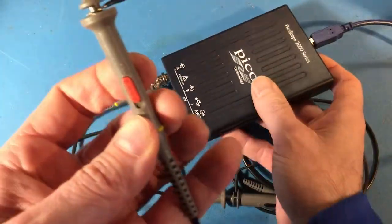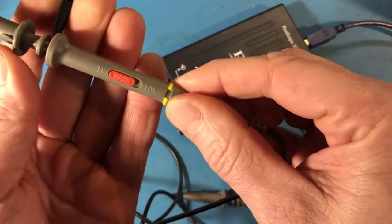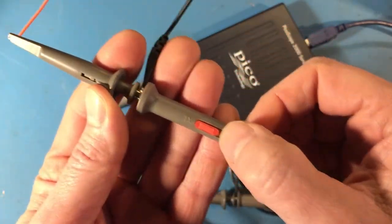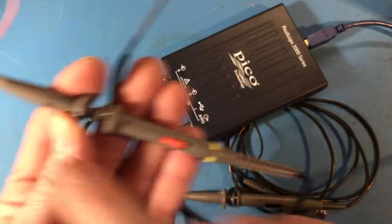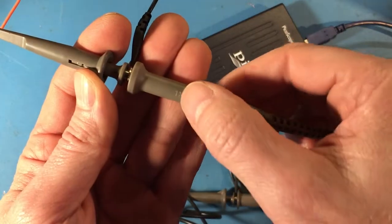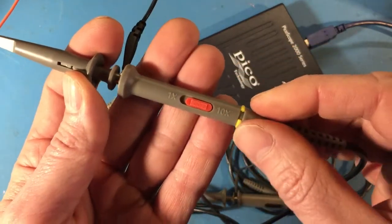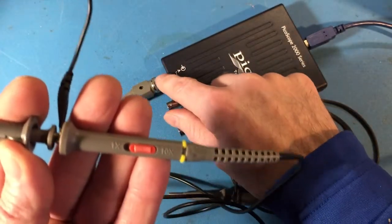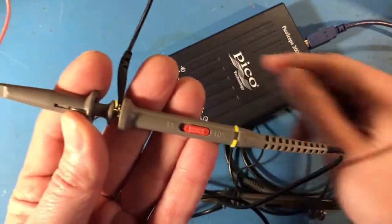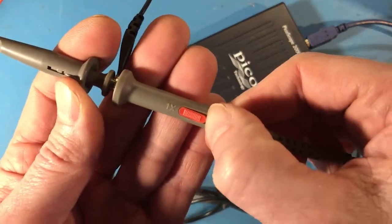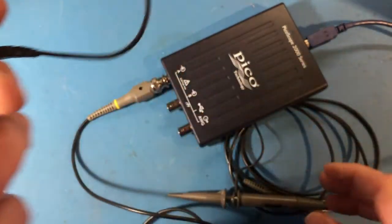So one other thing about oscilloscope probes, a lot of them have an attenuation selector on there. And the 1x means that it basically is connecting this tip here, like there's no change in the signal. If you put it on 10x, it's like putting a voltage divider that'll divide the voltage on the input by a factor of 10 at the output right here. And you could do that if you're measuring signals with really large voltages. For this class, just be sure it's set on 1 and everything should be fine.